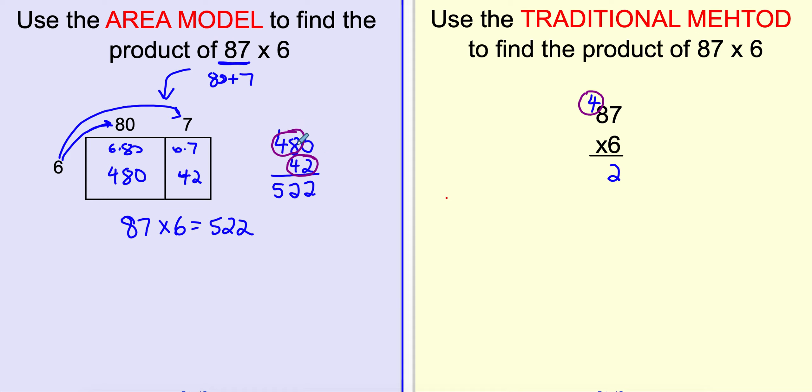What did I have to do? Well, I had to add the 4 from the 42 to get my 52. So I do 6 times 8 is 48 plus 4 is 52. So the answer is 522.